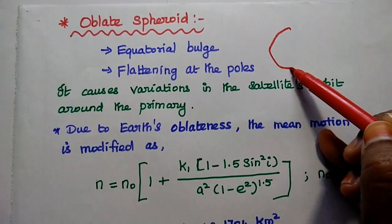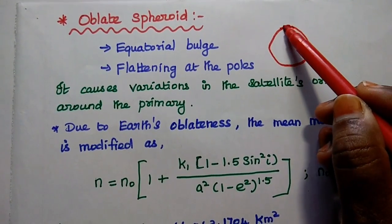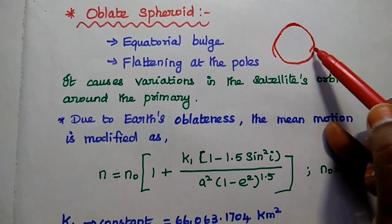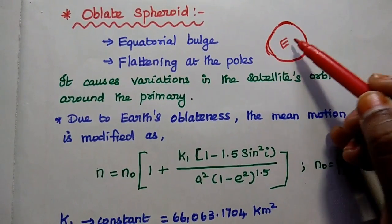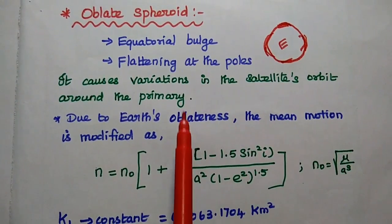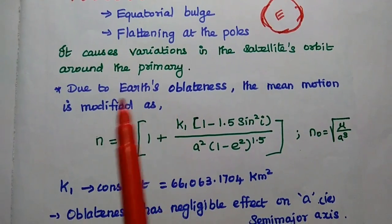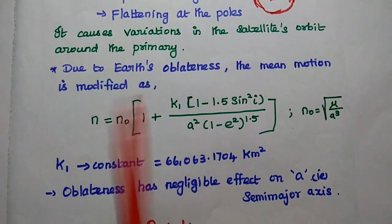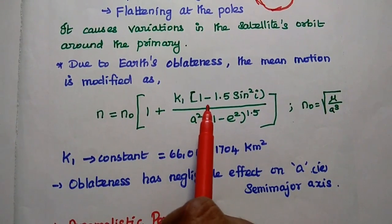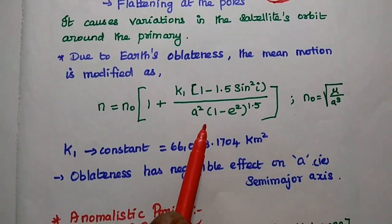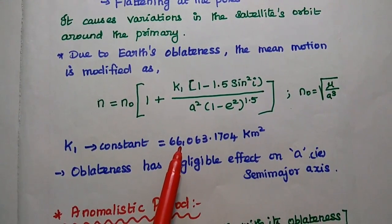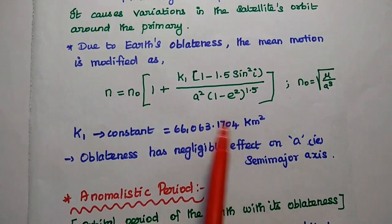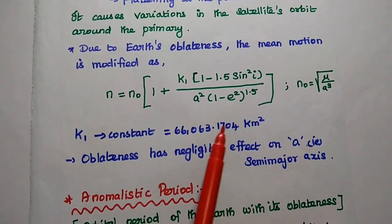We can consider the Earth having flatness at the poles and bulge at the equatorial plane. This causes variations in the satellite's orbit around the primary — where primary means Earth. Due to the flatness at the poles as well as the bulge at the equatorial plane, the mean motion is modified as N equals N0 times 1 plus K1 times (1 minus 1.5 sin squared I) divided by A squared times (1 minus E squared) to the power 1.5. Here K1 is a constant with value 66,063.1704 km². The oblate spheroid has negligible effect on the semi-major axis.